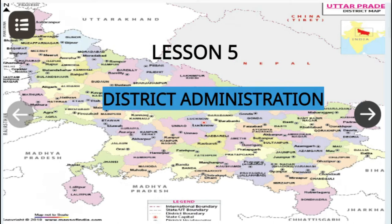District Administration means Zile Label Par Sashan Vivastha. As we know, India is divided into 28 states and 9 union territories. Each state has many districts. District is the most important unit of administration. In our state UP, there are 75 districts.